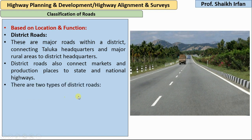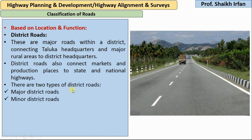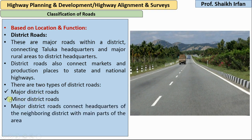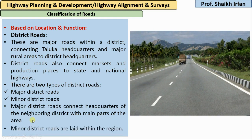District roads can be classified into two types: major district roads and minor district roads. Major district roads are those roads which connect headquarters of neighboring districts with the main parts of the area.